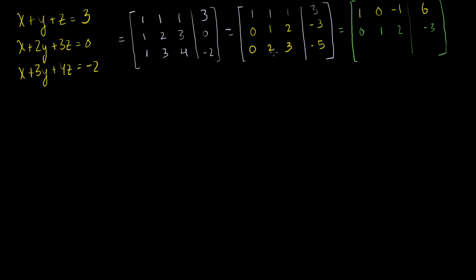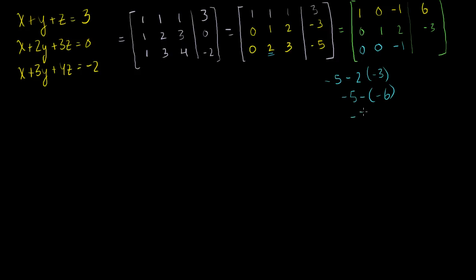Now let me zero out the y-entry in the third row. I'll replace the third row with the third row minus 2 times the second row: 0 minus 2 times 0 is 0; 2 minus 2 times 1 is 0; 3 minus 2 times 2 is 3 minus 4, which is minus 1; and minus 5 minus 2 times minus 3 is minus 5 plus 6, which equals 1. So the third row becomes 0, 0, minus 1, 1.